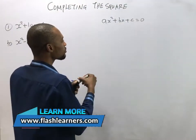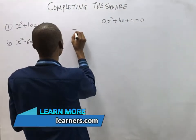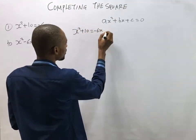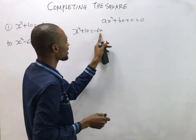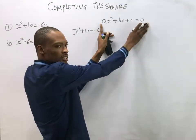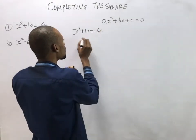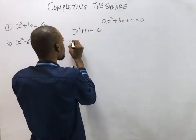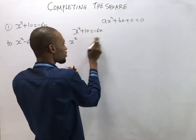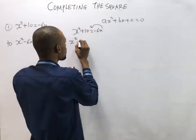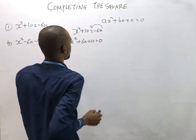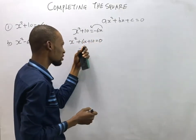Looking at our first example: s² + 10 = -6s. It has a squared term, an s term, and a constant, but it's not in standard form. We rearrange it: move -6s to the left to get s² + 6s + 10 = 0. This is now the standard form.